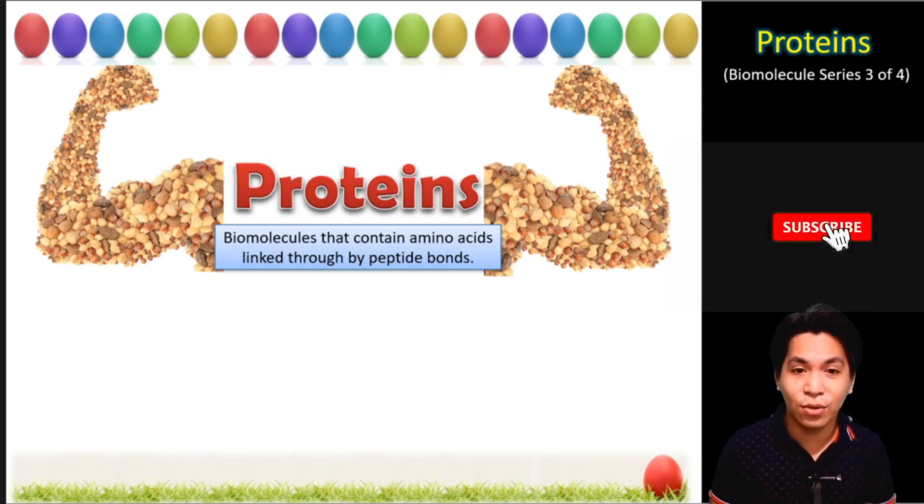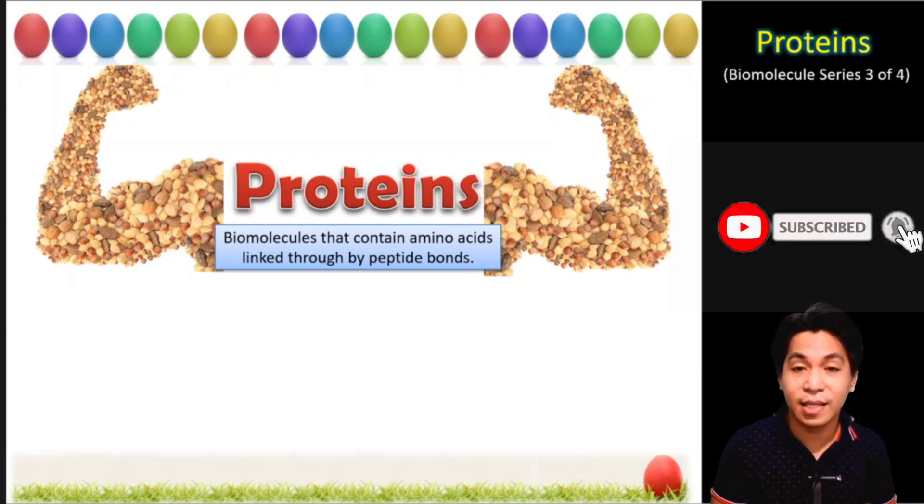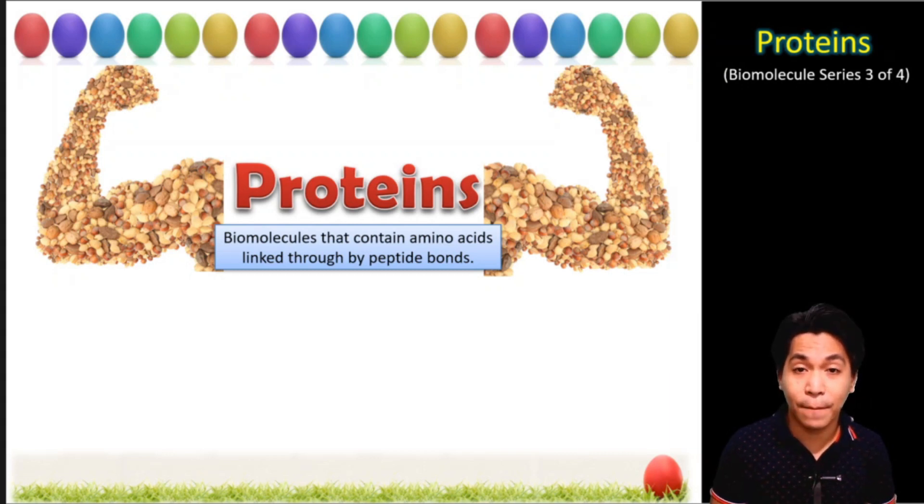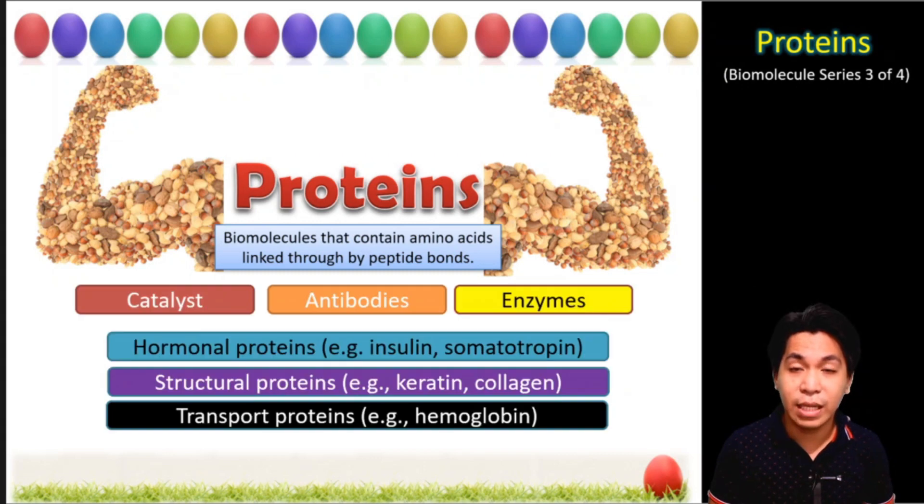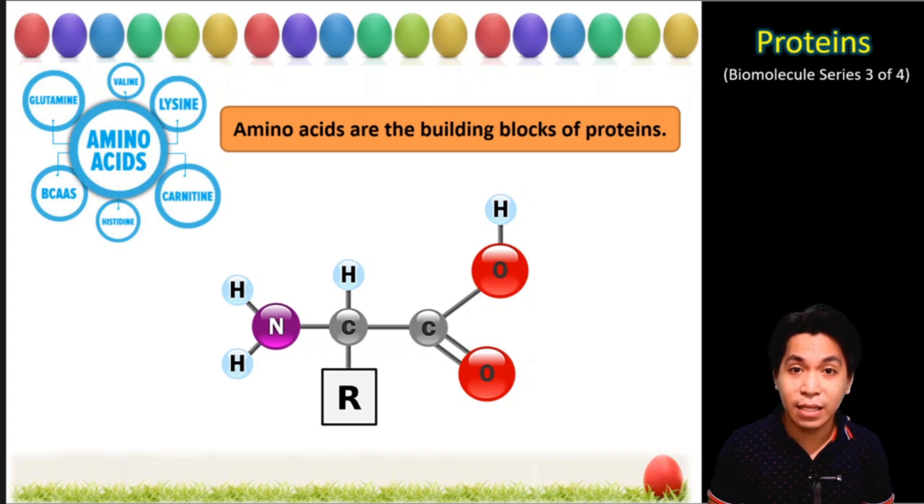Proteins are biomolecules that contain amino acids linked together via peptide bond. Proteins also act as catalysts, producing antibodies, enzymes, hormonal proteins such as insulin or somatotropin, structural proteins such as keratin and collagen, and act as transport proteins just like hemoglobin. All types of proteins are made from the same building block.